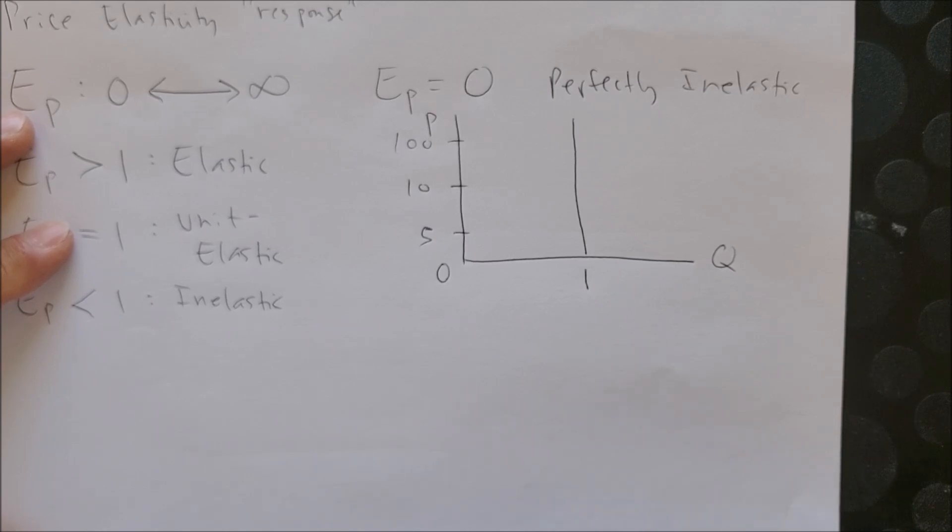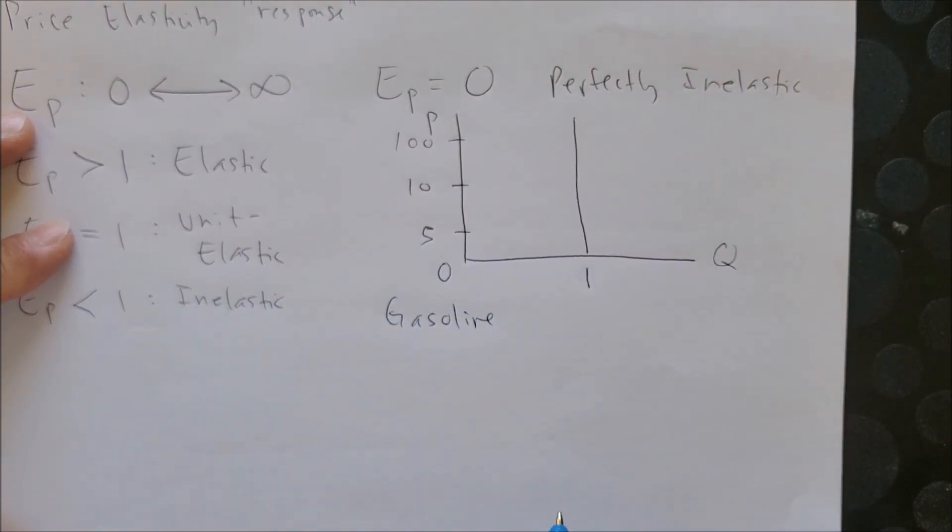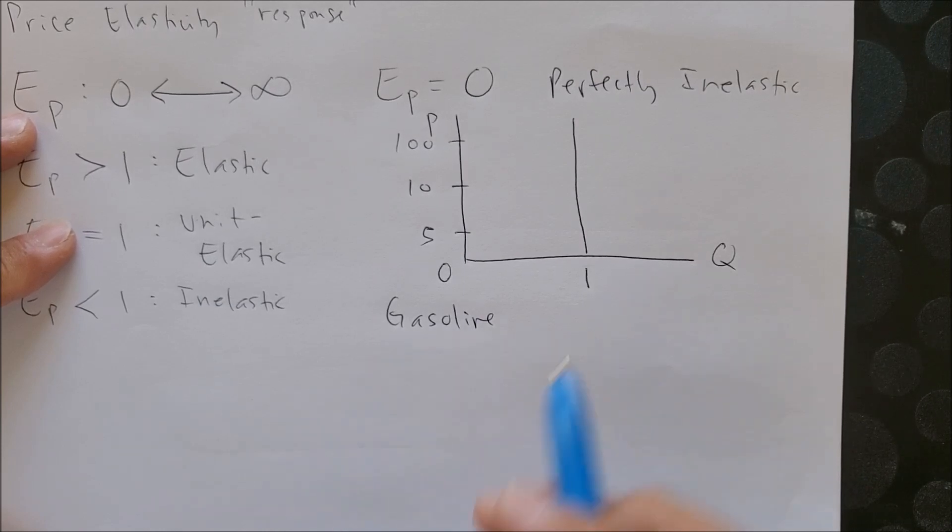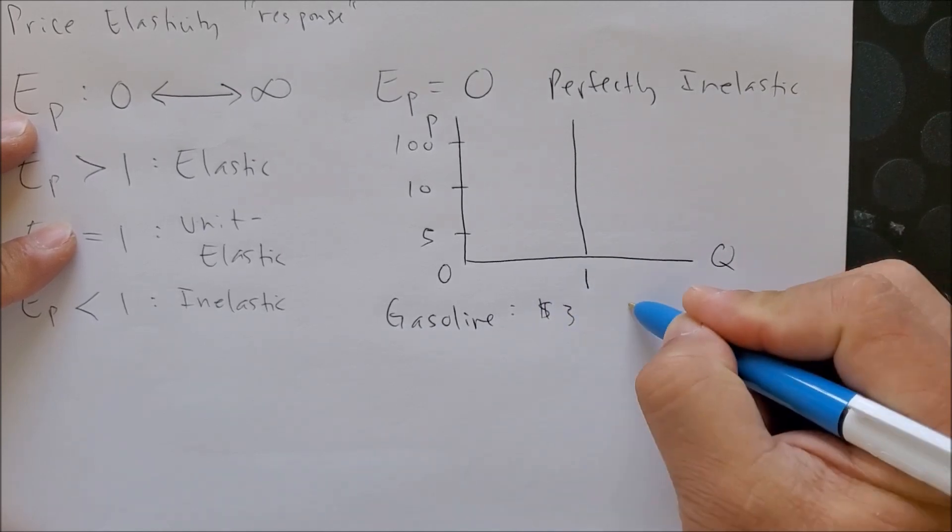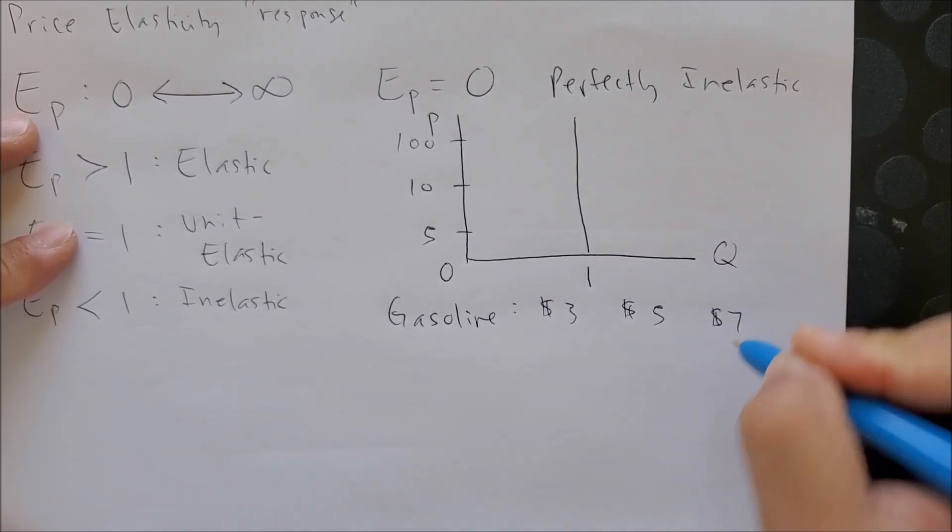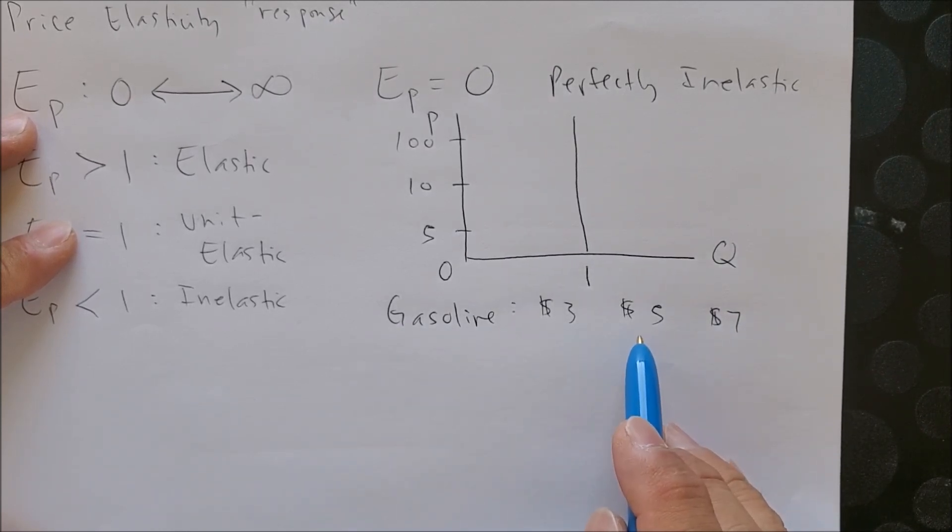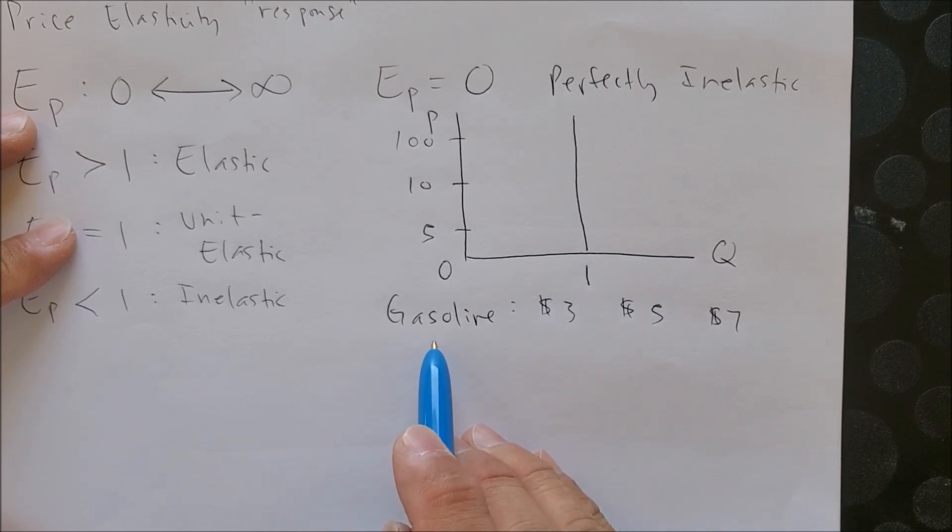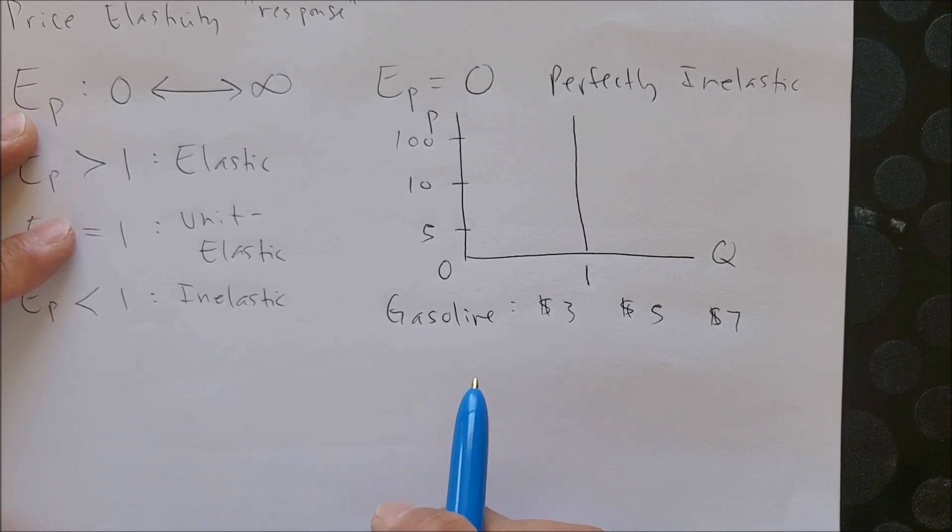That is perfectly inelastic. Although there really is no example today of a good that is perfectly inelastic, we do see how there are goods that could be highly inelastic. For example, gasoline is highly inelastic because if gas prices today were to increase three, five, or seven dollars, in the short run we will still consume gasoline. Why? Because we cannot substitute gasoline for something else in our vehicles.